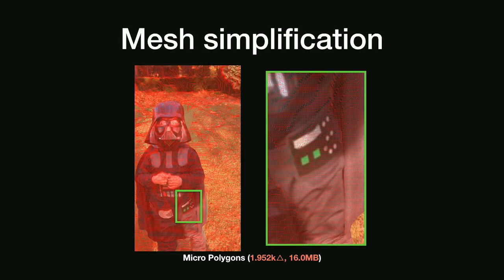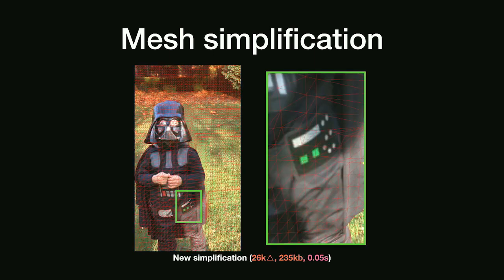We also cannot use the mesh as-is. If we connected every single vertex with a triangle, the mesh would be way too dense — in this instance, there are almost two million triangles. We created our own 3D mesh simplification algorithm for 3D photos, which greatly reduces the number of triangles needed. In this instance, it brought the number down from two million to just 26,000 triangles.